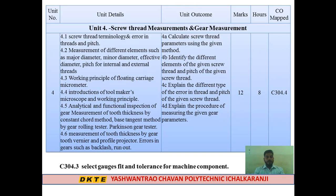The next unit is Unit 4: Screw Thread Measurement and Gear Measurement. We check these components in day-to-day life — the screw portion relates to assembly and the gear portion to power transmission. Topic 4.1 covers screw thread terminology, where key terminologies used in screw thread manufacturing are discussed.